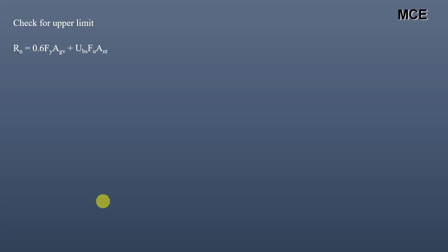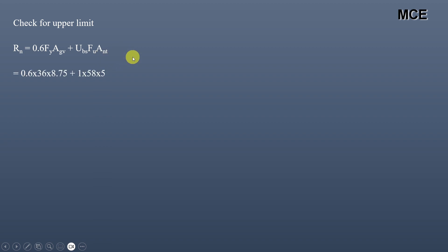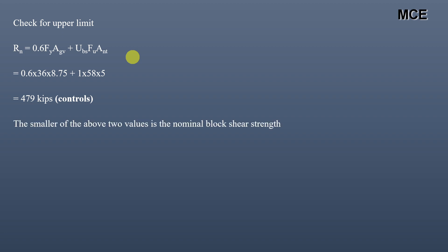We must check the upper limit of block shear strength: 0.6·Fy·Agv + Ubs·Fu·Ant = 0.6 × 36 × 8.75 + 1 × 58 × 5 = 479 kips. This value is smaller than the previous 594.5 kips, so the nominal block shear strength is taken as the smaller value.